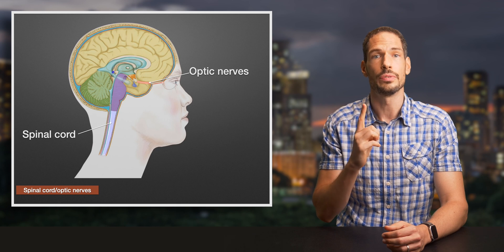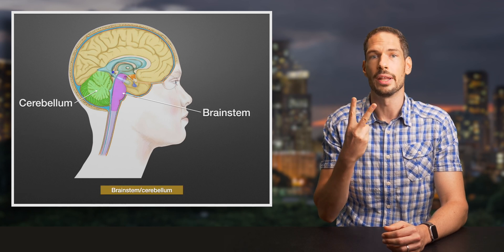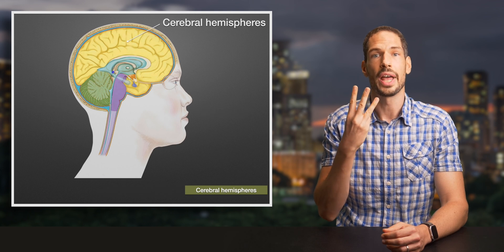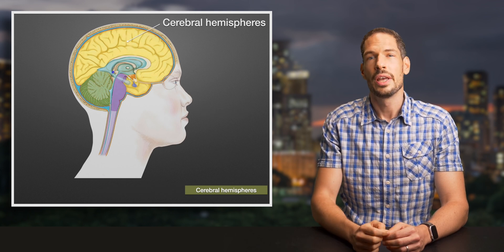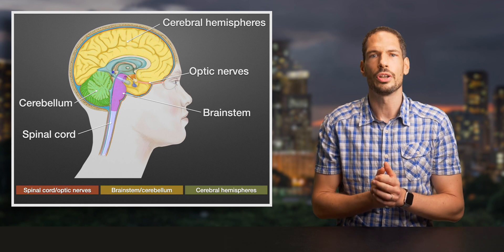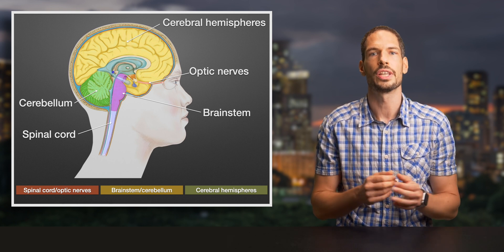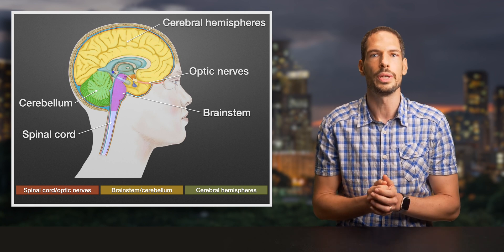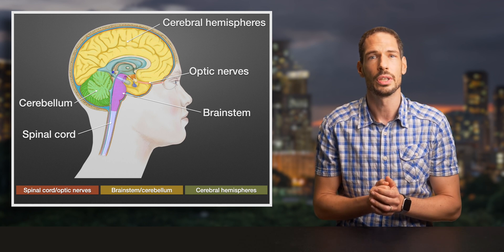Let's talk about the model. It distinguishes three different regions of the central nervous system: one, the spinal cord and the optic nerves; two, the brainstem and the cerebellum; and three, the cerebral hemispheres. These areas differ in their amount of functional reserve. The spinal cord and the optic nerves have far less functional reserve than the lobes of the brain, also called the cerebrum or the cerebral hemispheres.